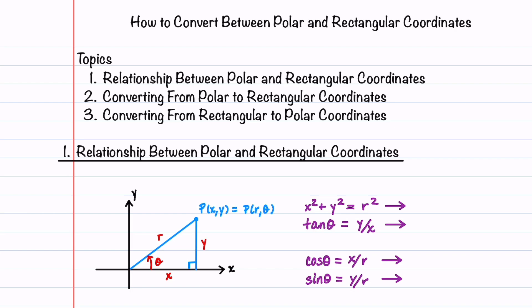We'll begin by understanding the relationship between polar and rectangular coordinates and find out what the equations are that we need to use to convert between these two coordinate systems. A point can be written in rectangular coordinates in terms of x and y, where x is the number of units to the right or left of the origin, and y is the number of units above or below the origin. The same point can also be written in polar coordinates in terms of r and theta, where r is the distance from the point to the origin, and theta is the angle measured from the positive x-axis to the line segment connecting the origin to the point.